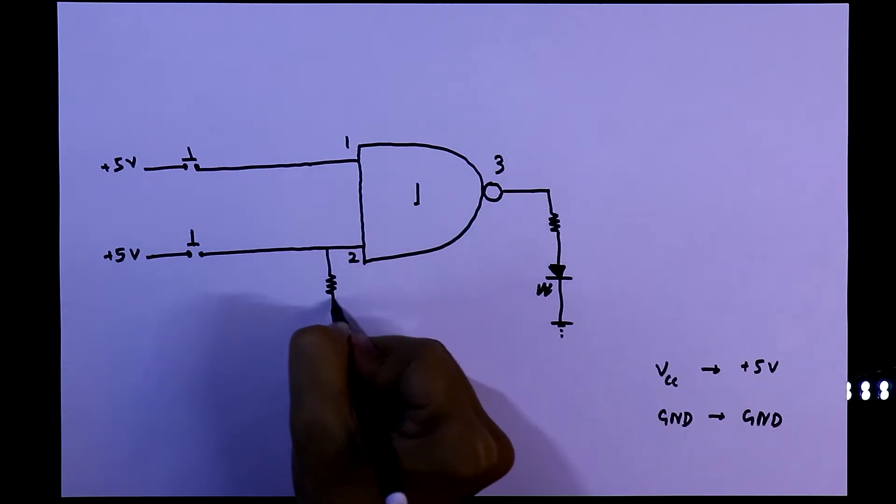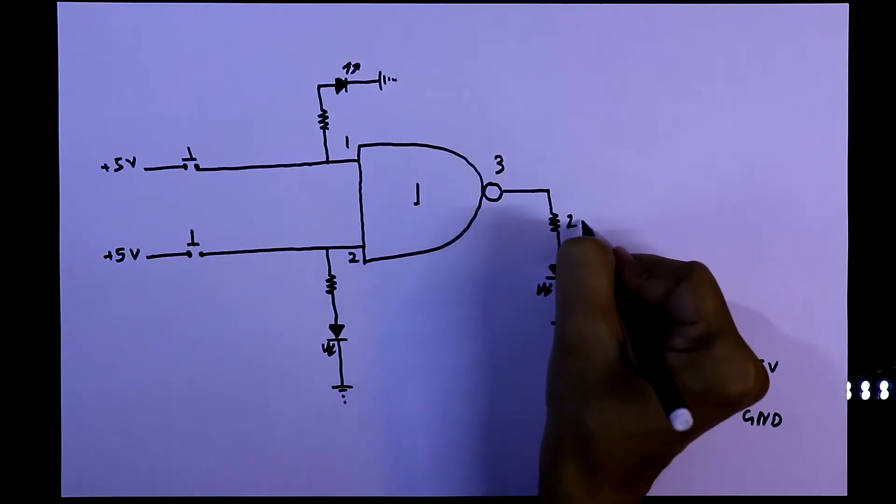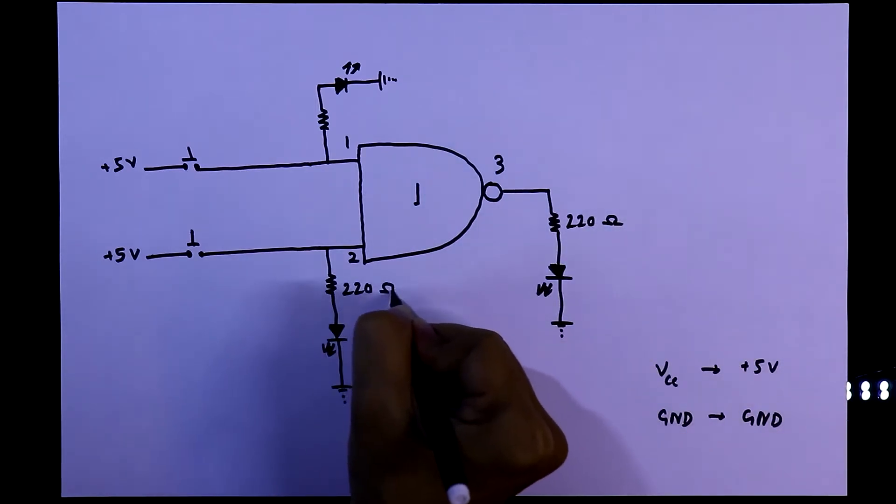And with the input, we also connect LEDs to see the input. And the value of the resistor is 220 ohms.